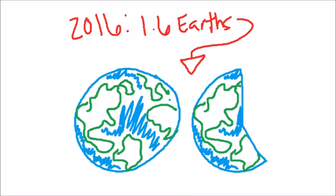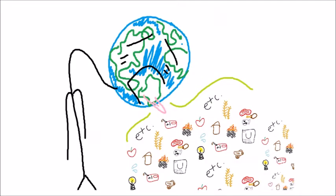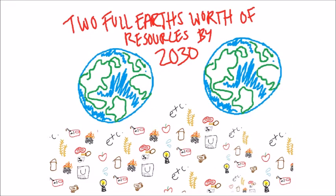Today, humanity uses the equivalent of 1.6 Earth's worth of resources. This overshoot is estimated to increase to two full Earth's worth of natural resources by 2030.